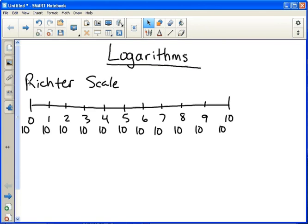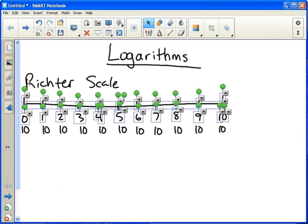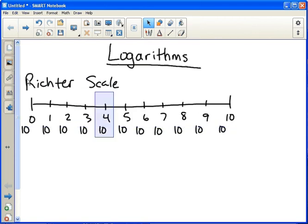And you can do that starting anywhere. I could start at a 4 and say, a 5 is 10 times more powerful. If we start at 4 again, a 5 is 10 times more powerful. 6 is 100 times. 7 is a thousand times. And so on. So each time you go up, it's a factor of 10.